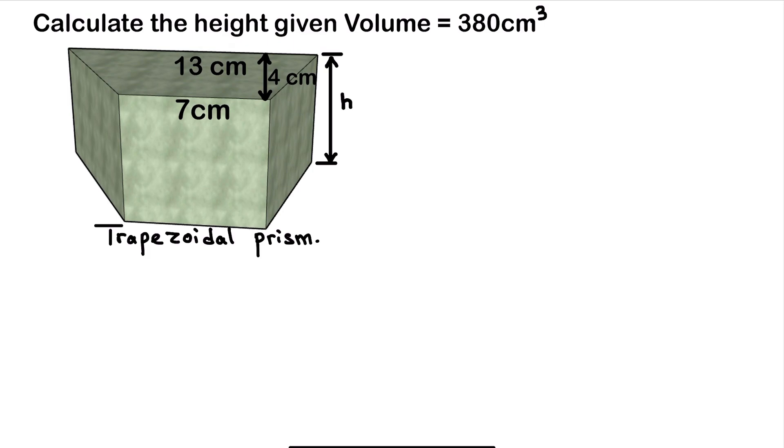So the first thing to do is to write the formula of volume for prism. So the formula of volume, volume is equal to base area times the height. So this is the formula of volume. So in this question they give us the volume already. So our volume, so we can just need to substitute. So the volume would be 380.